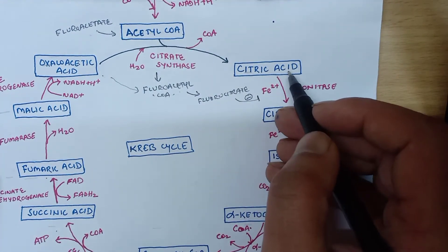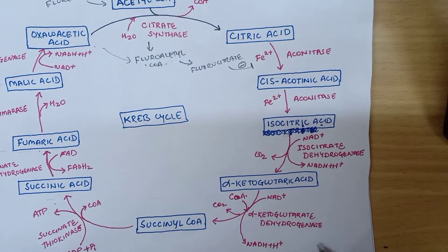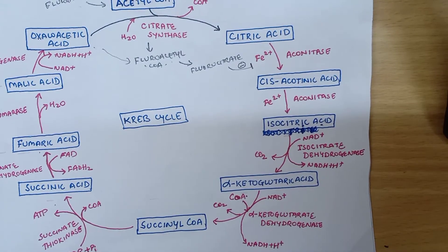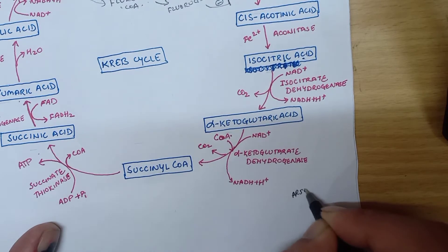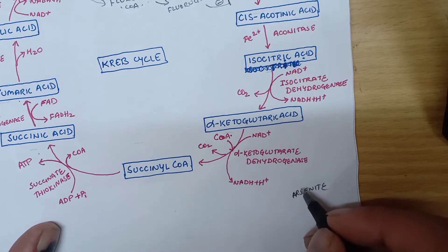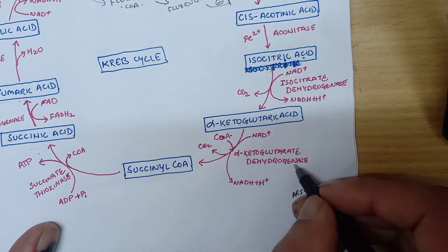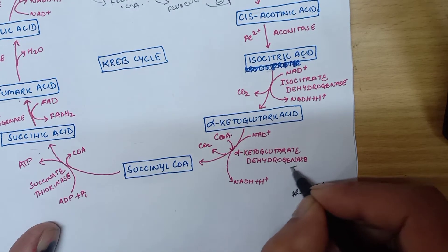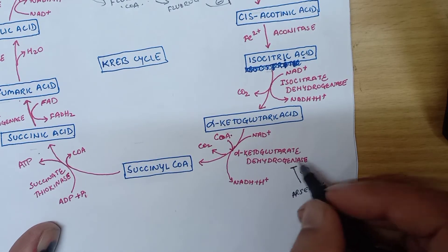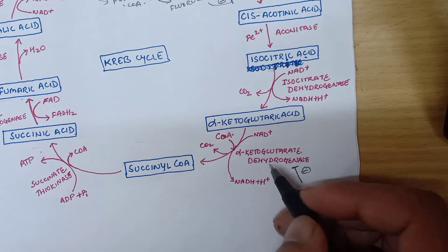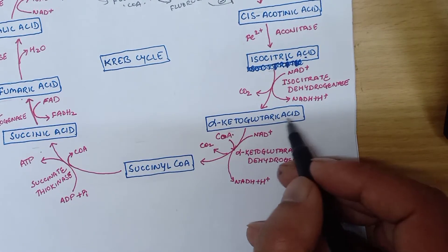The next inhibitor is arsenite, that is trivalent arsenic. Arsenite will non-competitively inhibit the alpha-ketoglutarate dehydrogenase enzyme.